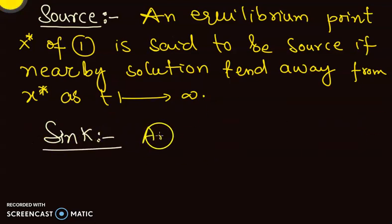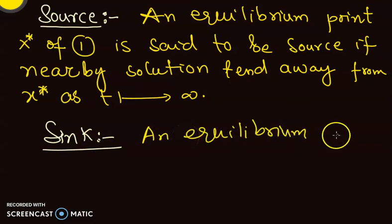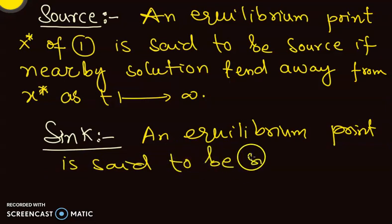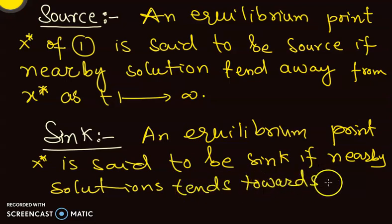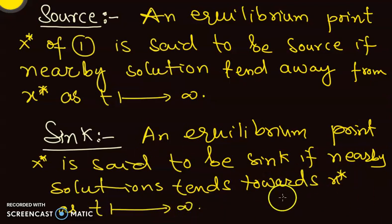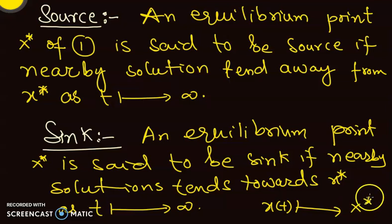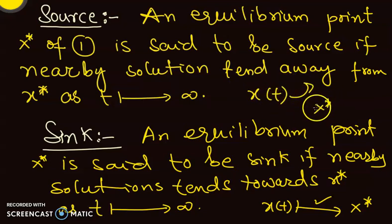On the same lines we define something called a sink. An equilibrium solution or equilibrium point is said to be a sink if nearby solutions tend towards x-star as t goes to infinity. If the trajectories tend towards x-star we call it a sink; if trajectories move away from x-star we call x-star a source.